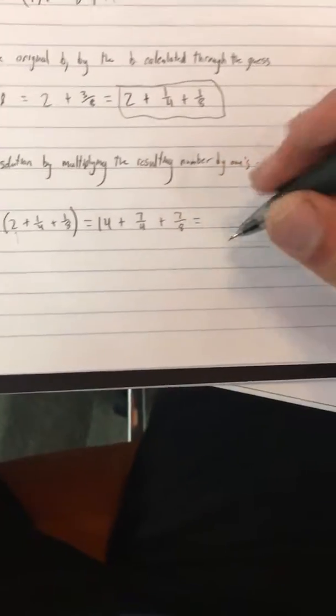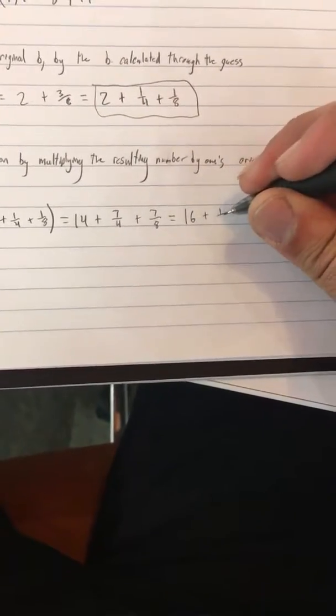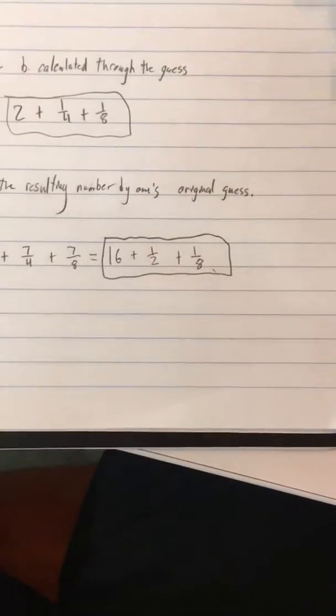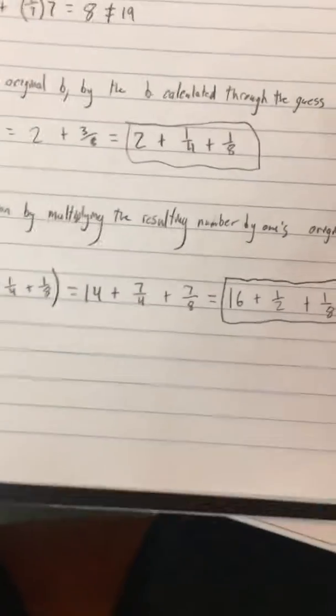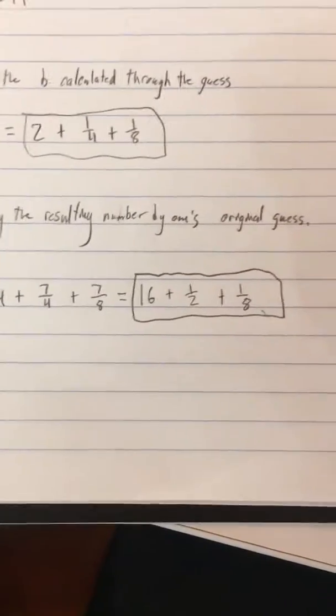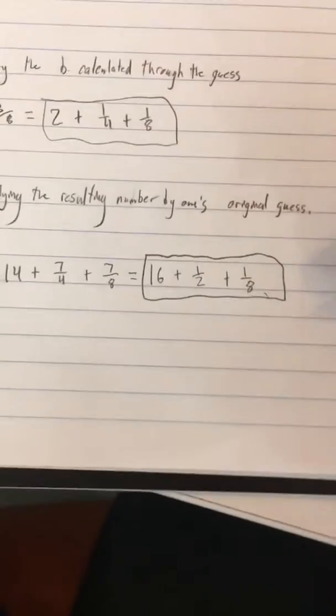And now, when we convert that into unit fractions, we get 16 plus 1/2 plus 1/8, which is going to be our final solution for this problem. And that's actually going to be the solution that Egyptians would have came up with naturally using Egyptian division techniques, as opposed to the modern division techniques that I utilized.